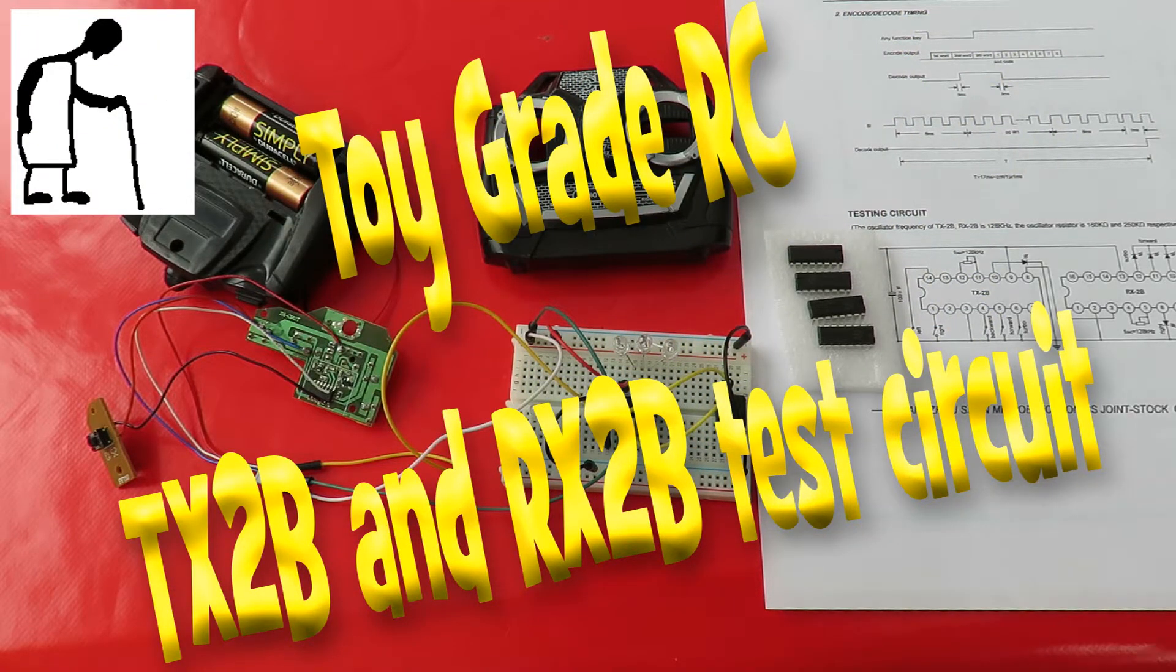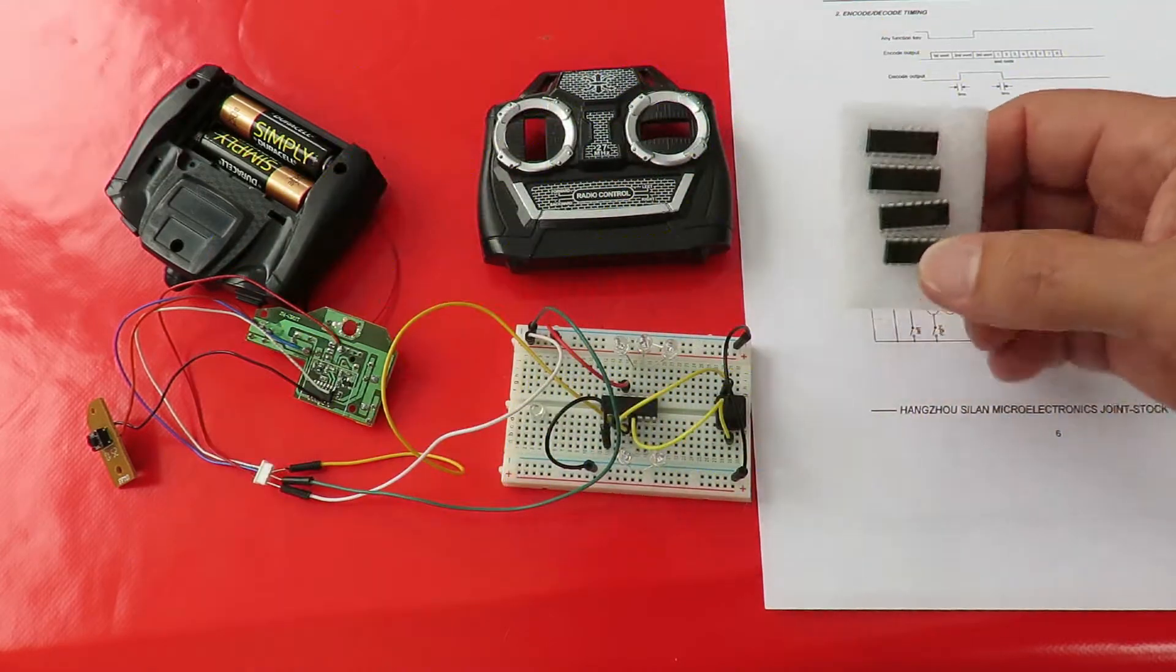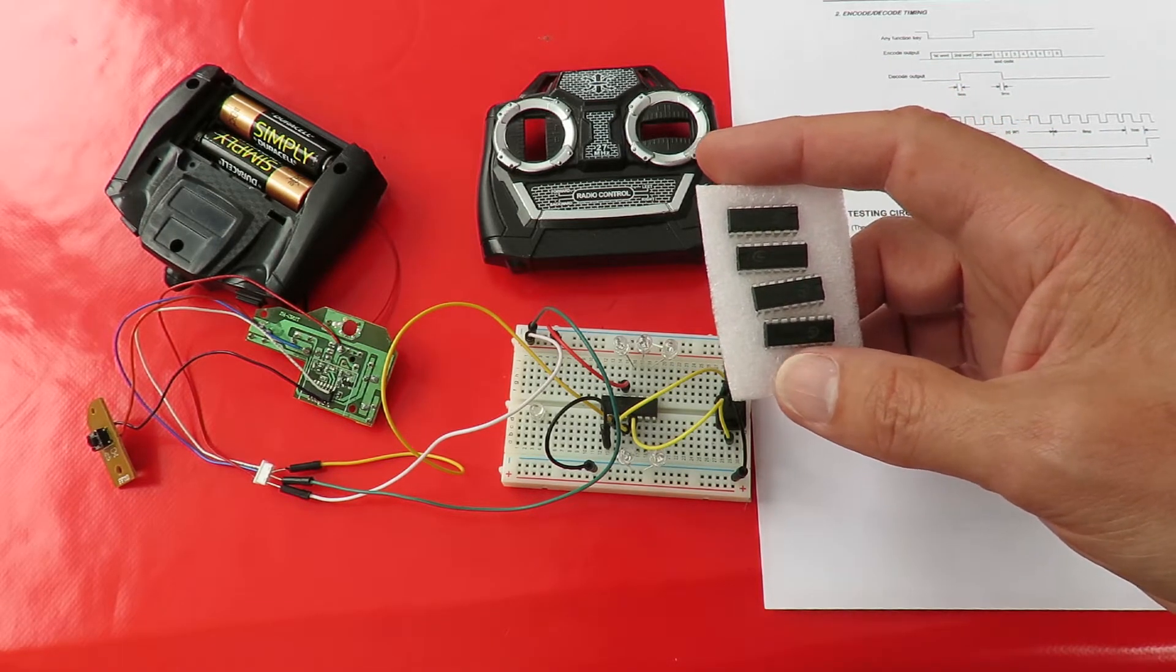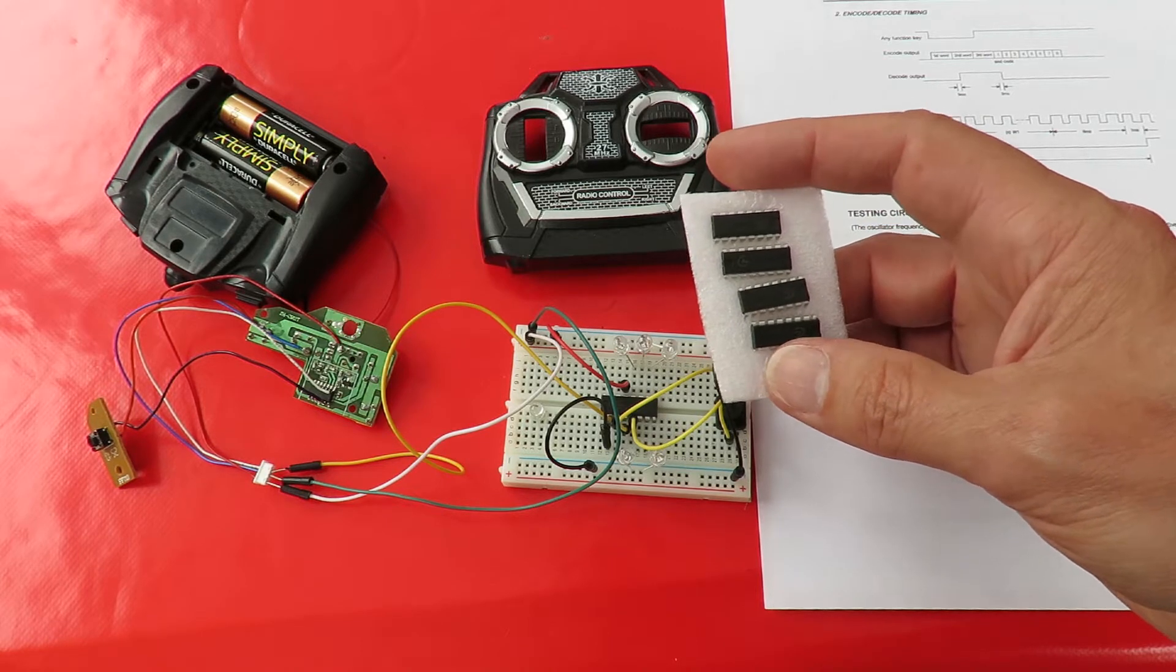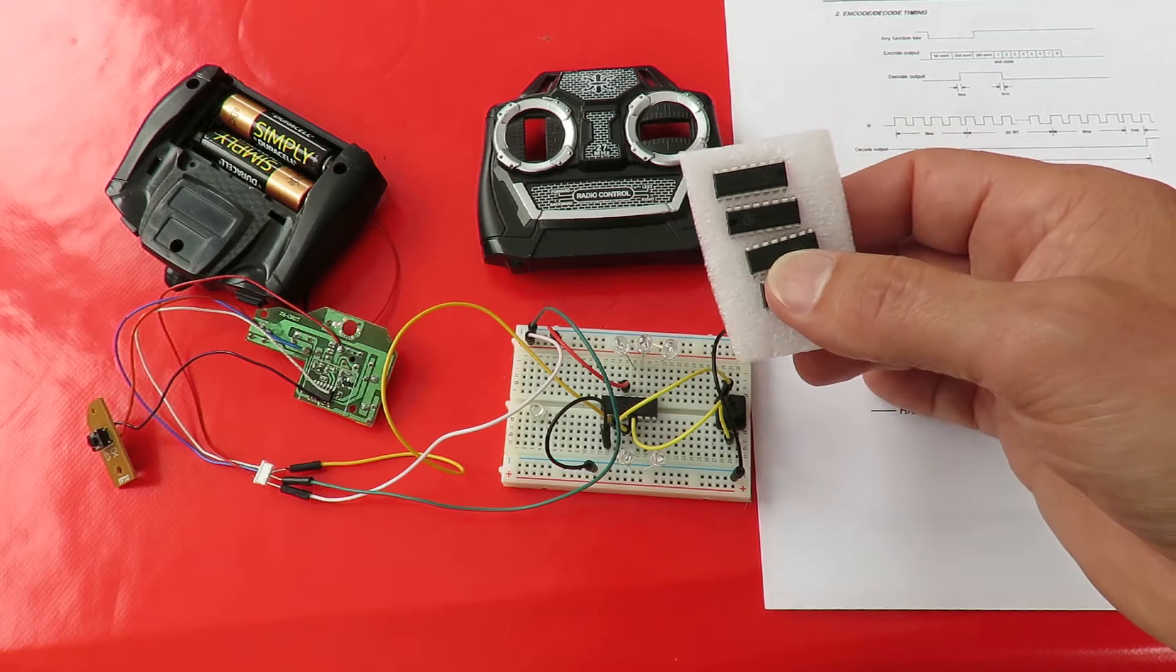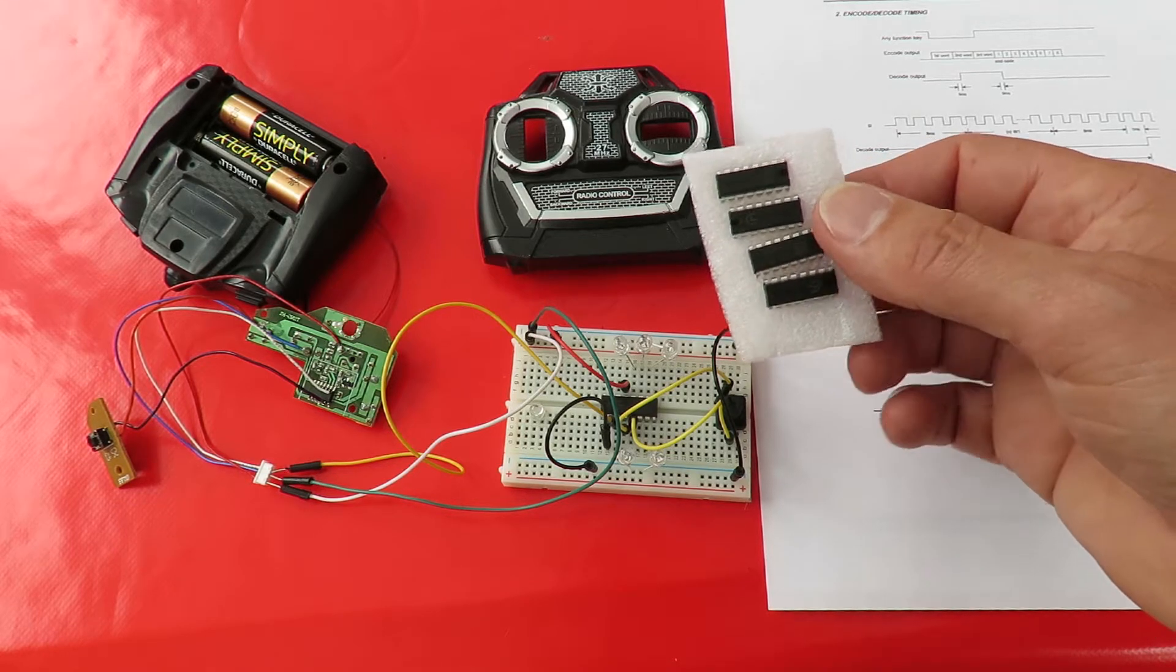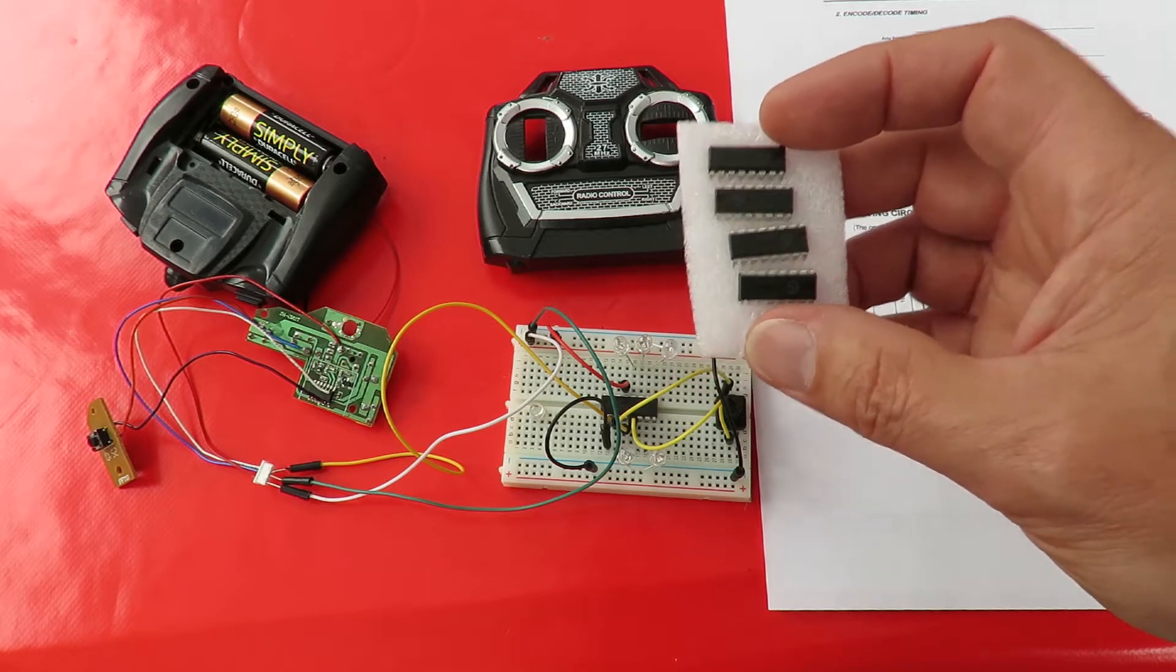Hi guys, in one of my recent Grandad's Post Bag videos, I showed you I'd ordered what I thought was a set of transmitter and receiver controller chips for toy grade radio controlled cars, the TX2B and the RX2B. Unfortunately, because I didn't read the listing properly, I ended up with a set of five RX2Bs, so they're just the receiver chips.